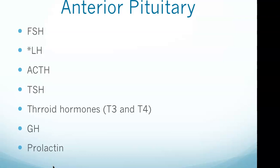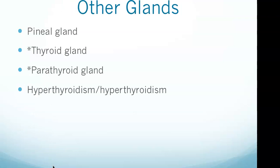Some other glands to touch on briefly: the pineal gland secretes melatonin to regulate sleep cycles. Of all endocrine organs, the function of the pineal gland was the last to be discovered. Located deep in the center of the brain, it was once known as the 'third eye.' The pineal gland produces melatonin, which helps maintain circadian rhythm and regulate reproductive hormones.